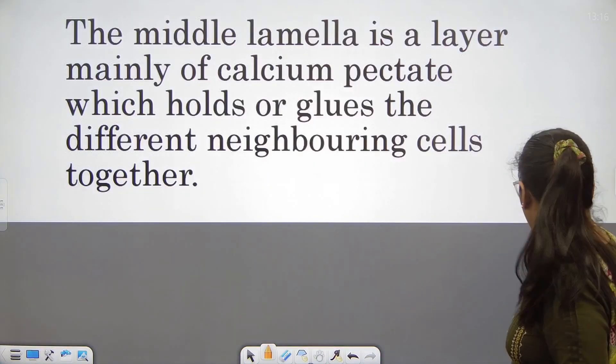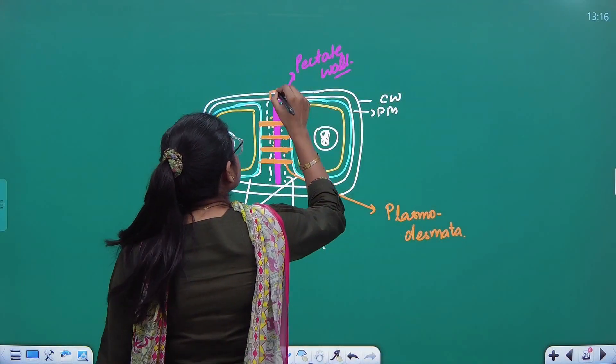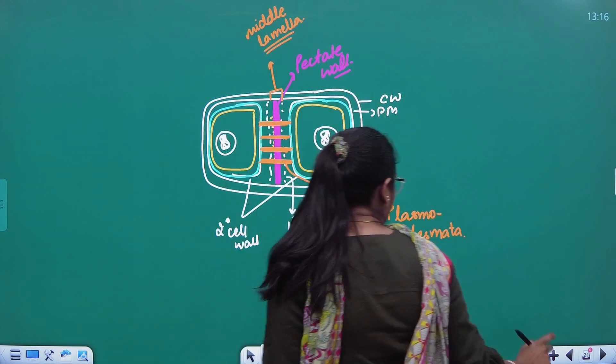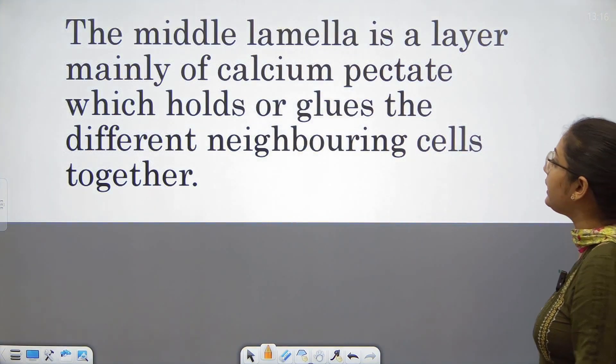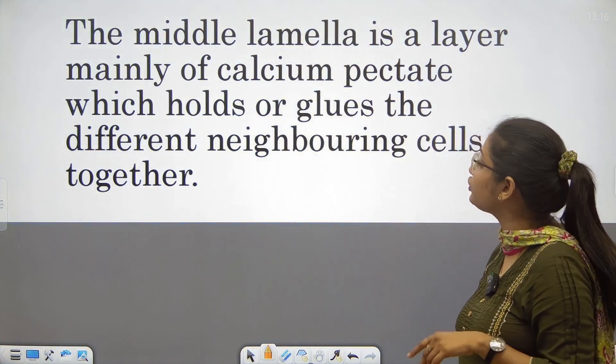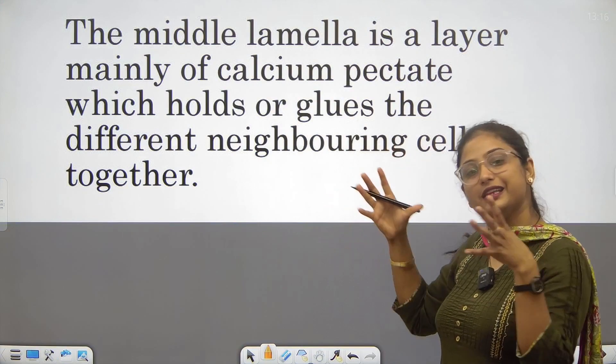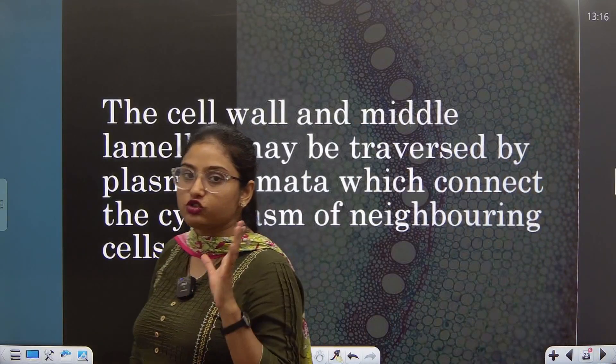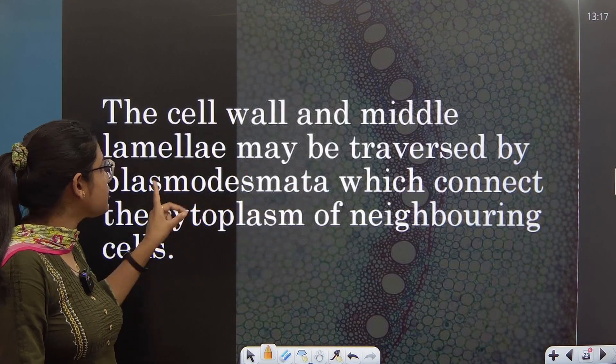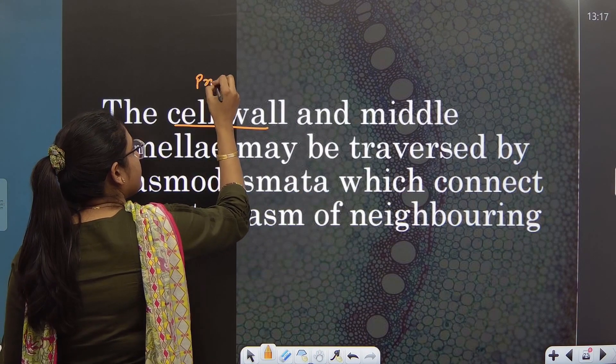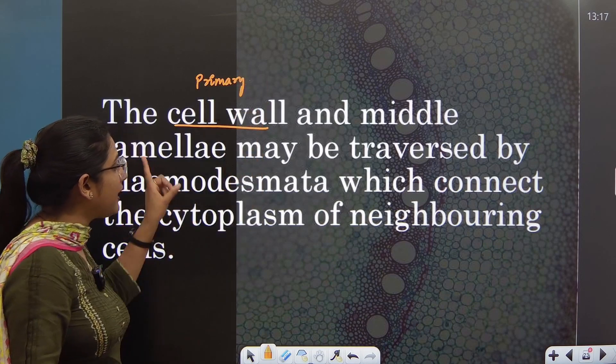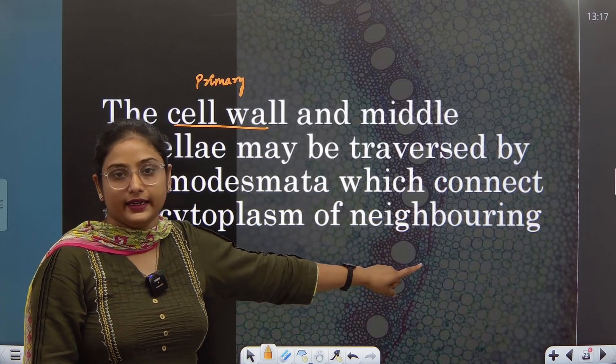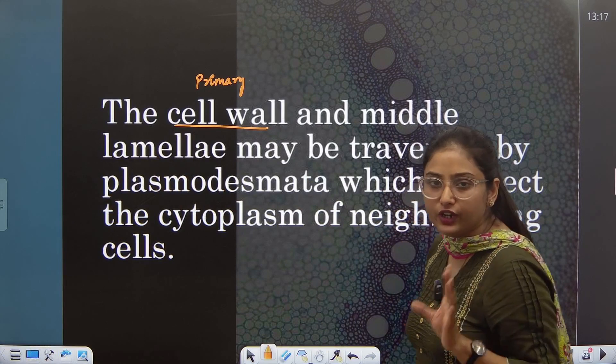Middle lamella, one more thing. Middle lamella is a layer which is mainly composed of calcium pectate which holds and glues the different neighboring cells together. Cell wall and the middle lamella may be traversed by plasmodesmata, which connects both cells' cytoplasm and they help in their interaction for transferring of any type of materials.